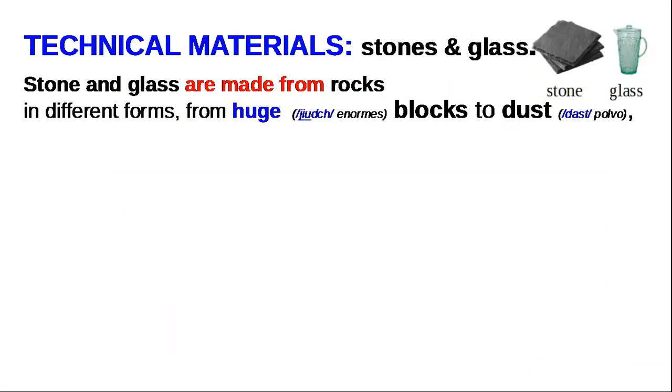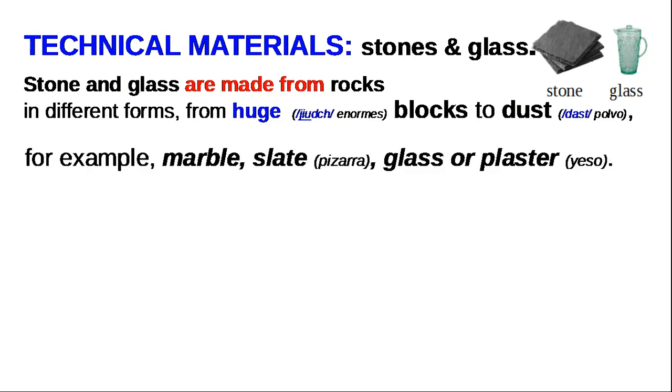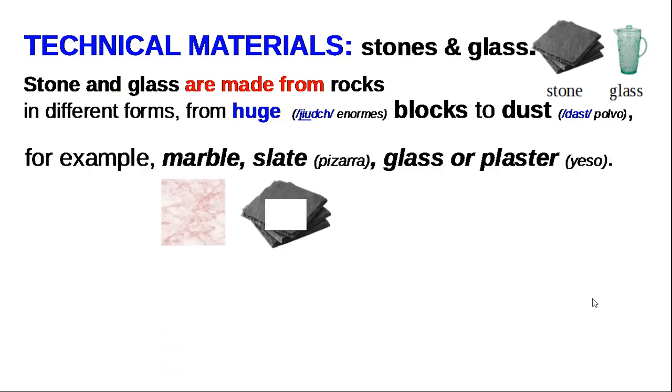Stone and glass are made from rocks in different forms, from huge blocks to dust — for example, marble, slate, glass or plaster.